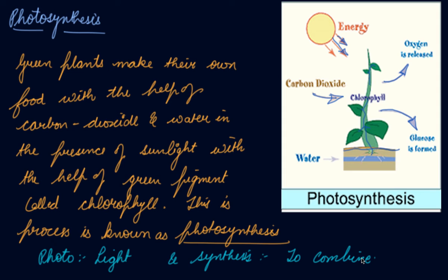Sunlight, carbon dioxide, water, and chlorophyll are necessary to carry out the process of photosynthesis. It is a unique process on earth. The solar energy is captured by the leaves and stored in the plant in the form of food. The sun is the ultimate source of energy for all living organisms. In the absence of photosynthesis, there would not be any food. The survival of almost all living organisms directly or indirectly depends upon the food made by the plants.